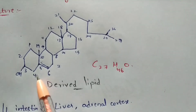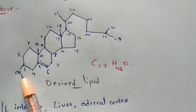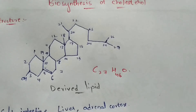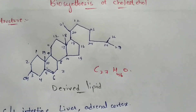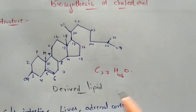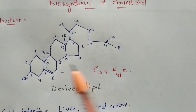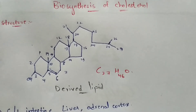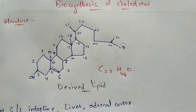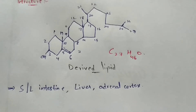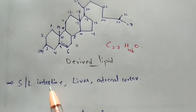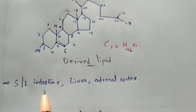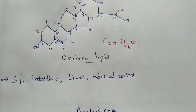At the 3rd carbon there is a hydroxyl group. In this way the structure of cholesterol is defined, with molecular formula C27H46O. Now, the biosynthesis of cholesterol normally takes place at the sites of the small intestine, large intestine, liver, and adrenal cortex.